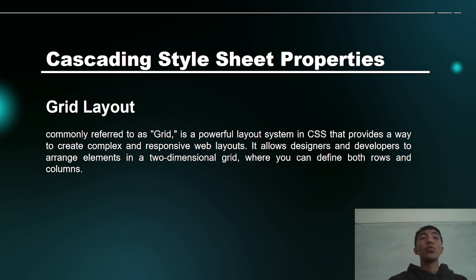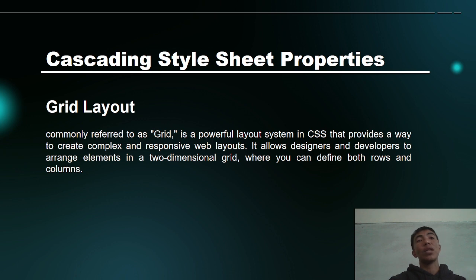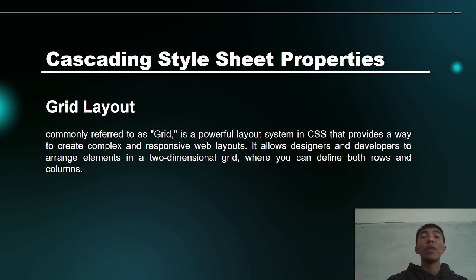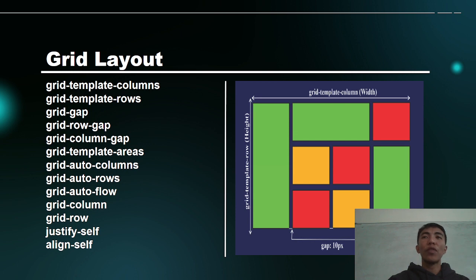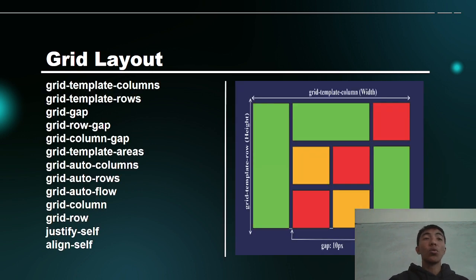Followed by grid layout, commonly referred to as grid. It is a powerful layout system in CSS that provides a way to create complex and responsive web layouts. It allows designers and developers to arrange elements into a two-dimensional grid where you can define both rows and columns. Properties under grid layout include: grid-template-columns, grid-template-rows, grid-gap, grid-row-gap, grid-column-gap, grid-template-areas, grid-auto-columns, auto-rows, auto-flow, column, row, and align-self.